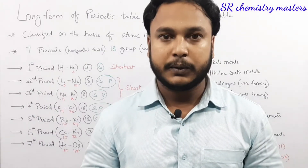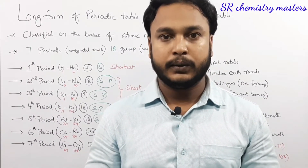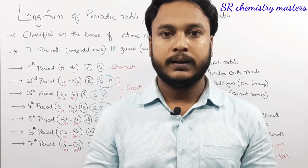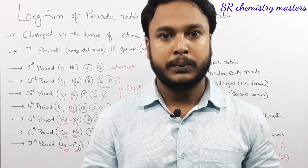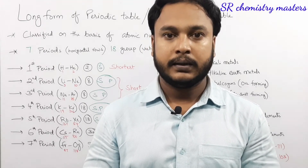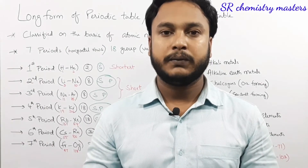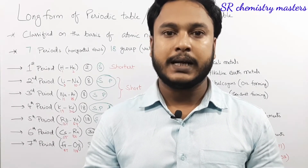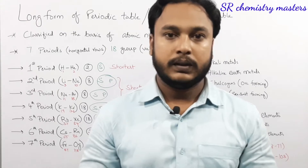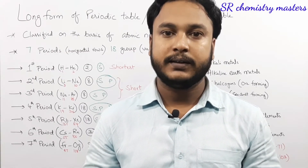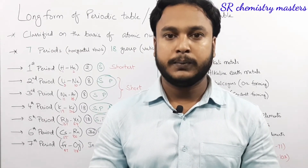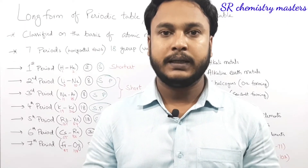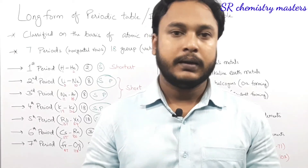When we look at the groups, we have 18 groups in the periodic table. Previously the groups were numbered as per Roman numerals, where we had eight A and eight B. But in the periodic table which we are using nowadays, there are 18 groups as per the IUPAC. The vertical columns present in the periodic table are considered as groups, and there are 18 groups in total.